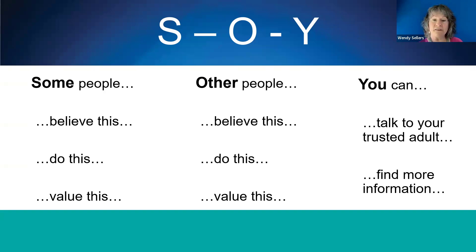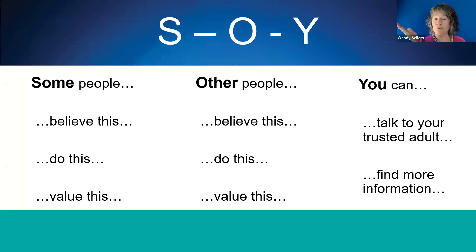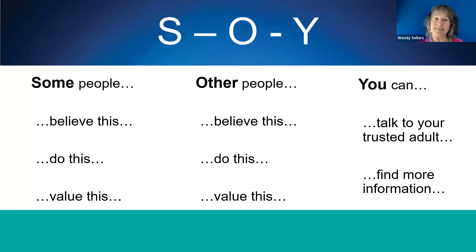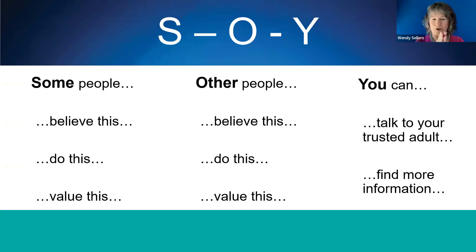With the question about the right age to have sex, we could say something like: thank you for asking that question. Different people have different opinions about the right age to have sex. Some people believe that you shouldn't have sex until you're able to handle the possible consequences. Other people believe that you should wait until you're married. You can talk to your parent or other trusted adult to find out what they think. One more thing: state law in Michigan says it's illegal to have sex before age 16. Notice that I used the SOI formula — some people, other people, and you can find out more — and then I added the state law because it applied to this question.